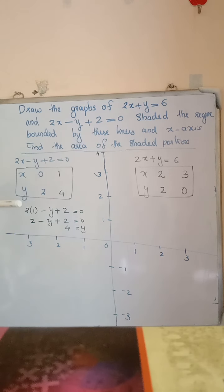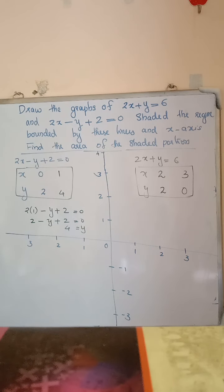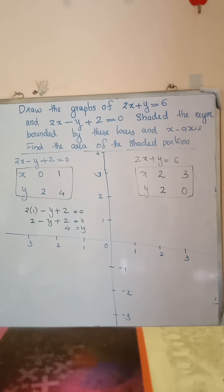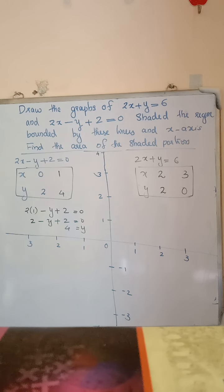First, we draw the two graphs: 2x minus y plus 2 is equal to 0, and 2x plus y is equal to 6. These are two linear equations in two variables x and y. The graph of a linear equation is a straight line. To draw a straight line, we need only two points. Joining those two points, we get the line.